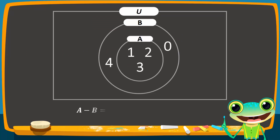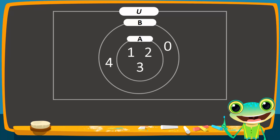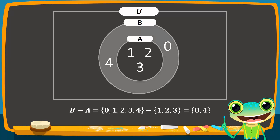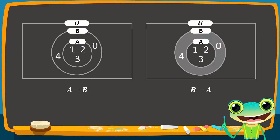We can verify this with a simple calculation. Hence, we do not shade any region. B difference A will have a set that contains all the elements of set B that are not in set A — in other words, elements only in set B. This corresponds to the region that contains 0 and 4. Therefore, when A is a subset of B, A difference B is an empty set, while B difference A is shown by shading the part of set B that lies outside set A.